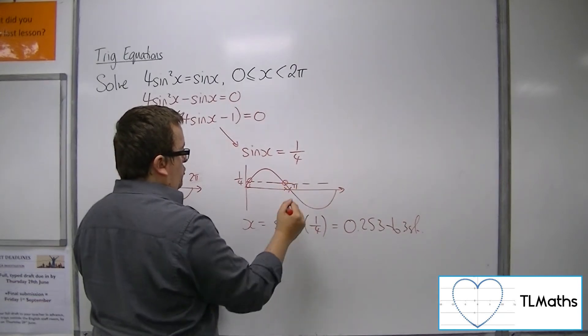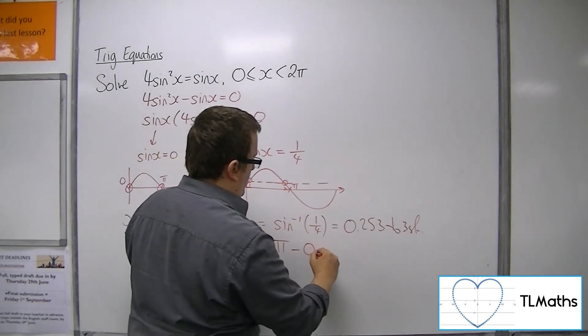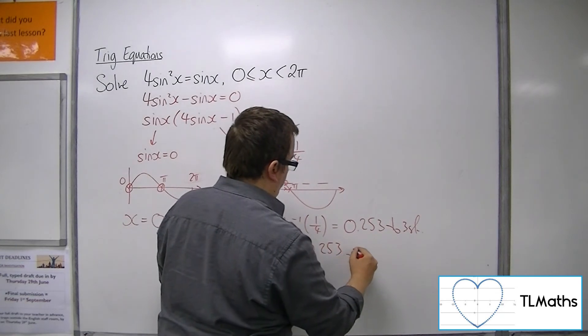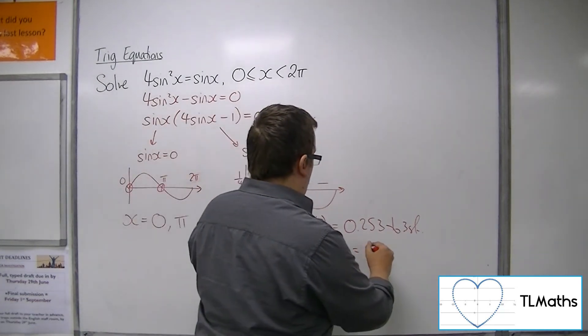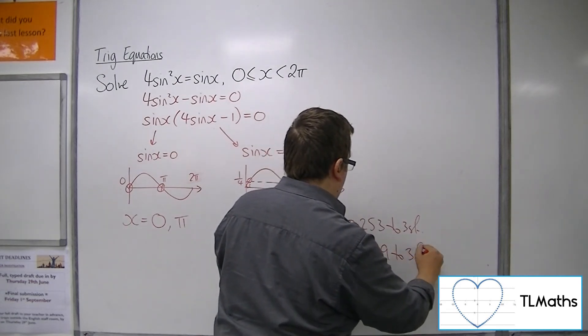So if I subtract that from pi, that will get me the second solution, which is 2.89 to three sig fig.